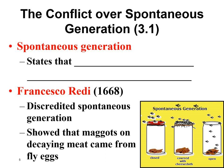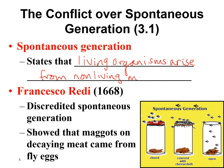Next we have the idea of spontaneous generation. This is a really old idea that's been around since the time of Aristotle. Spontaneous generation is totally wrong, but it states that living organisms arise from nonliving matter. You can see why they used to think this — they didn't have microscopes and couldn't see cells dividing or egg and sperm. So they just thought flies generate from dead meat.